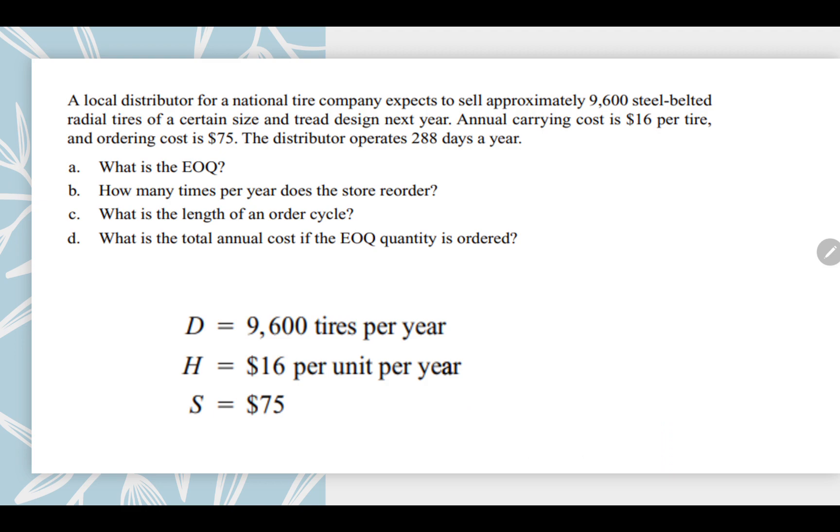Let's see the problem now. There is a local distributor for a national tire company which is expecting to sell 9,600 steel-belted radial tires of certain size and tread design next year. From this first line, it is clear that 9,600 is the annual demand, that is your capital D.